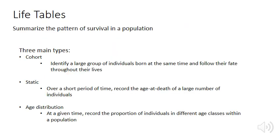One of the main ways that we study patterns of mortality in populations is to construct life tables. Life tables summarize the pattern of survival in a population, and there are three main types of life table that we can construct.